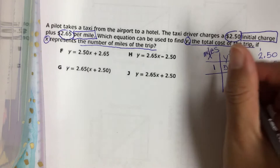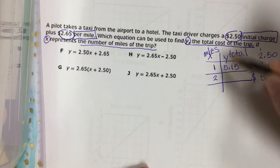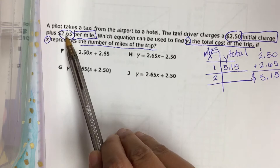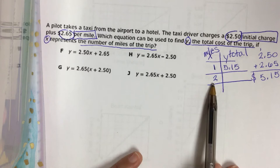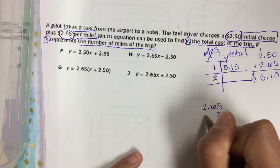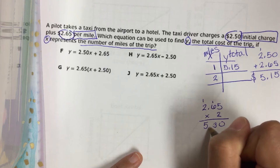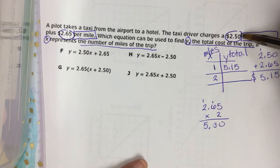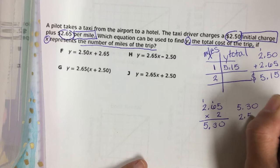I'm gonna calculate one more just to be on the safe side. So what if I go two miles? What am I gonna have to pay? Well he's gonna charge me $2.65 for each mile. So he's gonna charge me $2.65 two times. $2.65 two times plus the initial $2.50 he charges just for me to get in the car. So $5.30 plus $2.50.